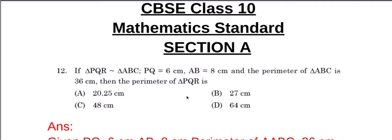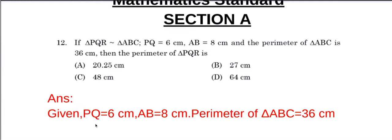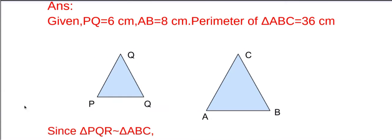Here we have to find the perimeter of triangle PQR. So let us find the answer. Given PQ equal to 6 cm and length of AB is equal to 8 cm and perimeter of triangle ABC is 36 cm, and also triangle PQR and triangle ABC are similar. So here is triangle PQR and triangle ABC.